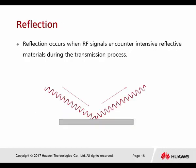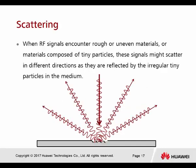The next feature is refraction. Refraction occurs when the radio frequency signal encounters an intensive reflective material — material that will not allow radio frequency to pass through — so the radio wave will be refracted to another angle. Then there is scattering: when an RF signal encounters rough or uneven material, or material composed of tiny particles, the signal may scatter in different directions as it is refracted by the irregular tiny particles in the medium.